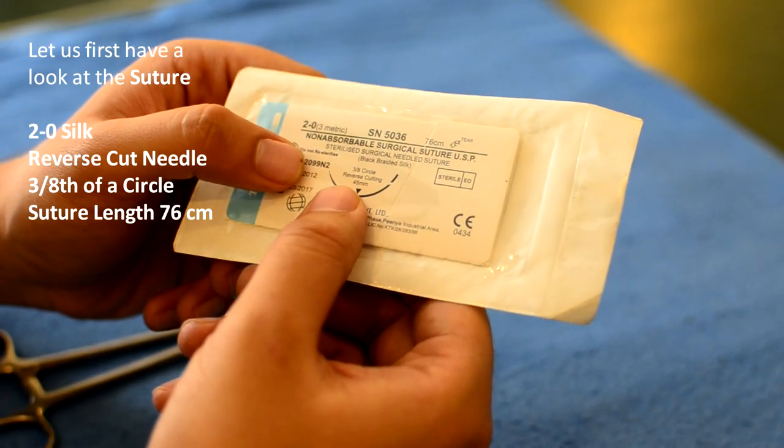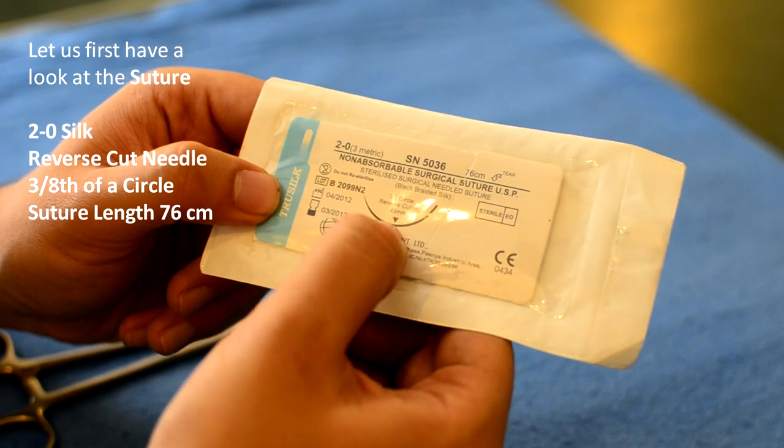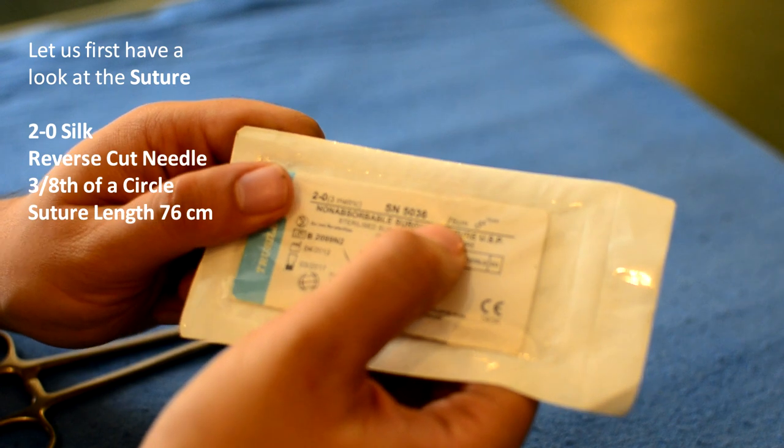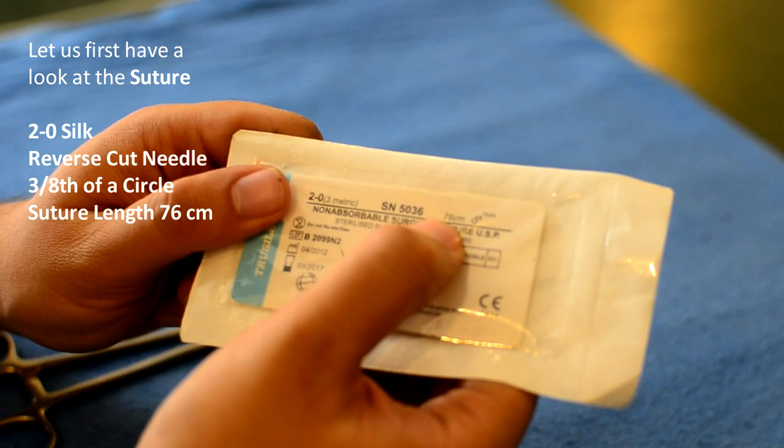Let's first take a look at the suture. What we have in hand is a 2-0 silk suture with a reverse cut needle. It's in 3-8 of a circle and the length of the suture is 76 cm.